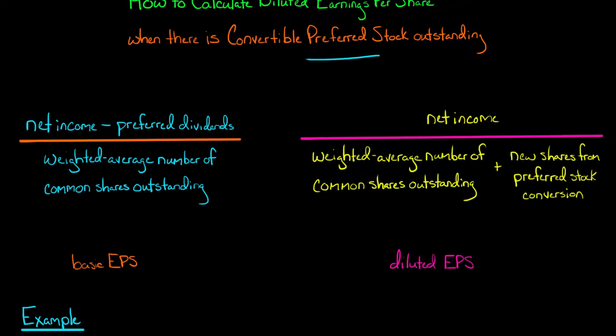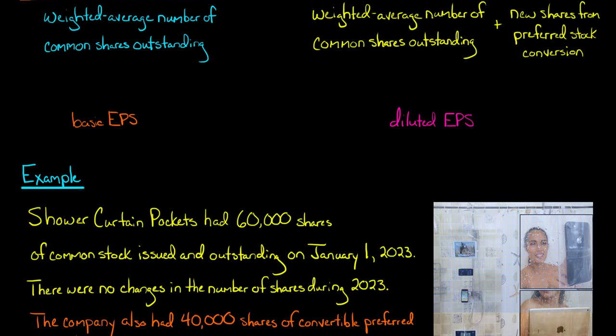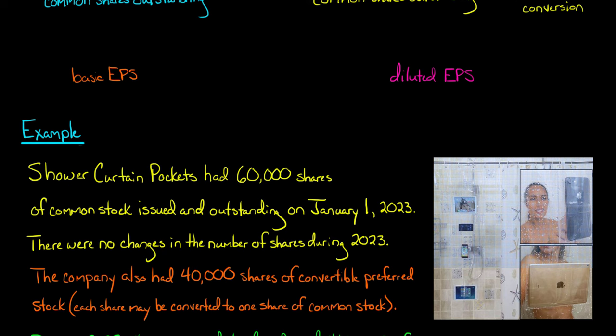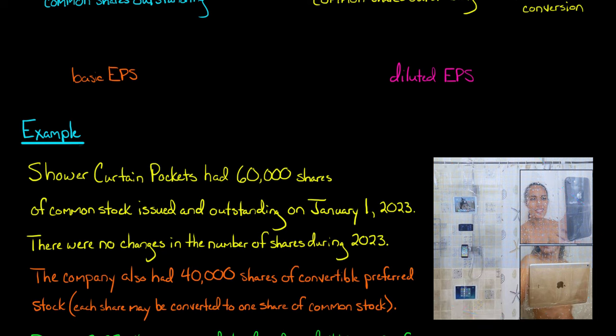Let's do an example with some actual numbers. Take the company Shower Curtain Pockets — they make a shower curtain with pockets for hanging your iPad and other electronic devices so they don't get wet when you're in the shower. In my opinion, if you're that addicted to electronics you have a problem. All right, so Shower Curtain Pockets had 60,000 shares of common stock issued and outstanding on January 1st, 2023.